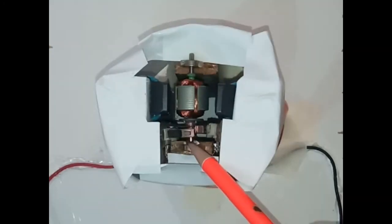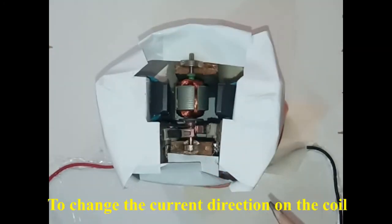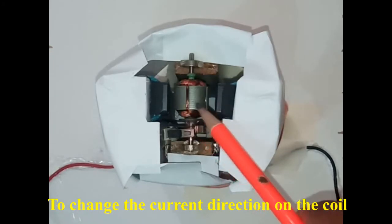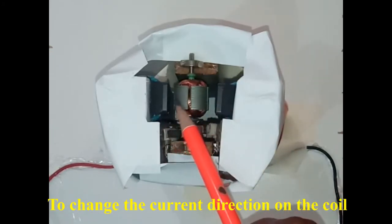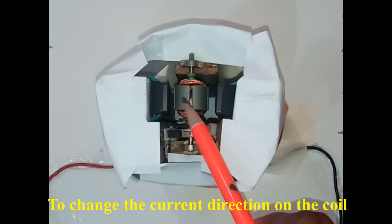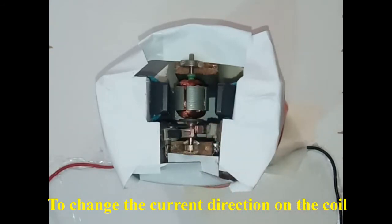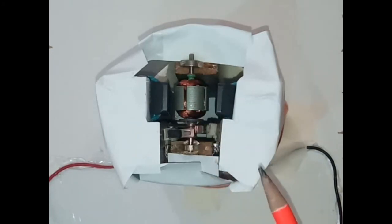The purpose of this split ring commutator is to change the current direction in the coil. For one complete rotation, the split ring commutator will change the current direction twice in this coil. We will see in detail in the next video.